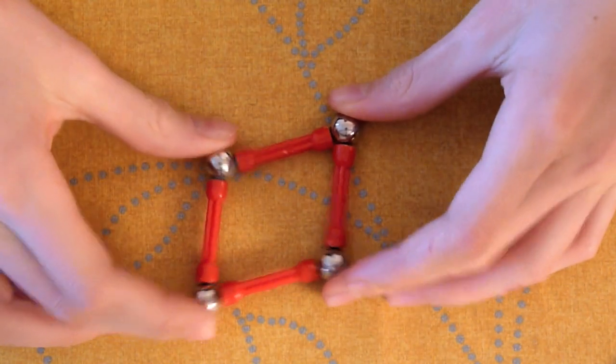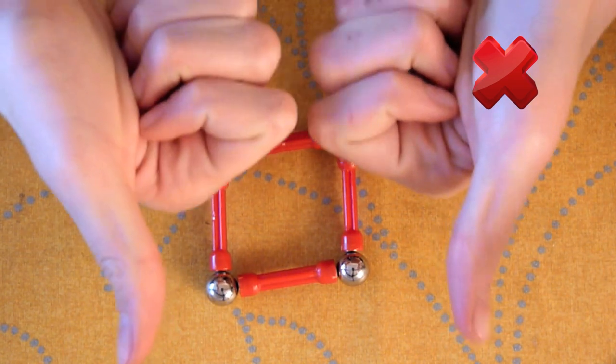Now let's try with a square. As you can see from the start it's very flexible. So that probably means that it won't distribute its weight evenly.